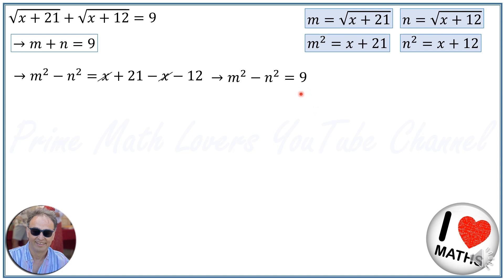From the difference of squares identity in algebra, we know that a squared minus b squared equals a minus b times a plus b. So m squared minus n squared I can write as m plus n times m minus n, which equals 9.